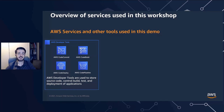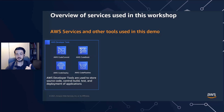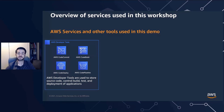AWS CodeDeploy is a fully managed deployment service that automates software deployment to a variety of instances including Amazon EC2, AWS Fargate, AWS Lambda, and even on-premise servers. AWS CodePipeline is a fully managed continuous delivery service that helps automate your release pipeline for fast and reliable application and infrastructure releases.